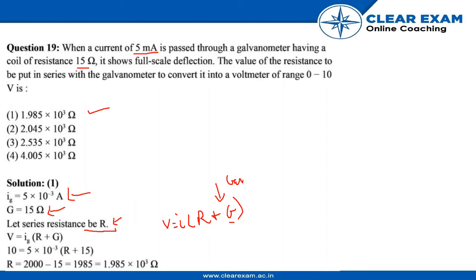G is the galvanometer resistance. Now let's put in the values. We have I, we know V, and we know G.